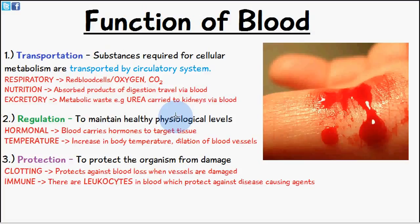The second function of blood is regulation, which is to maintain healthy physiological levels. In the case of hormones, blood carries hormones to the target tissue. In the case of temperature, when we have an increase in body temperature, we have the dilation of the superficial blood vessels. Blood is directed closer to the surface of the skin so that heat can be removed from the body through this mechanism.